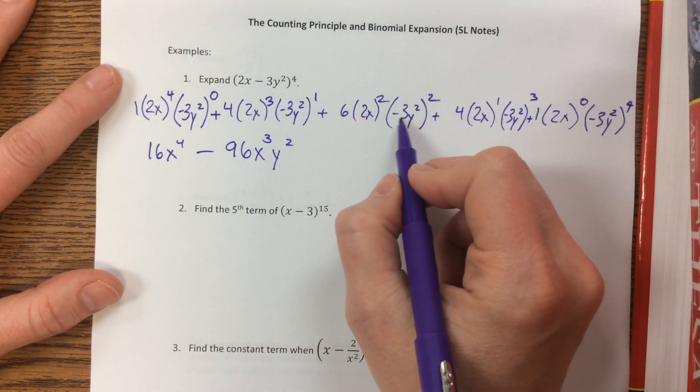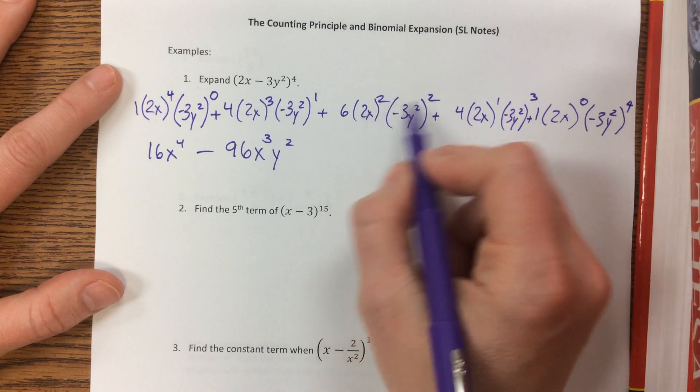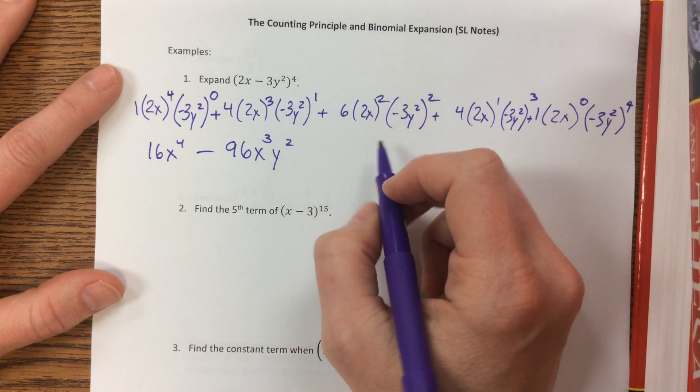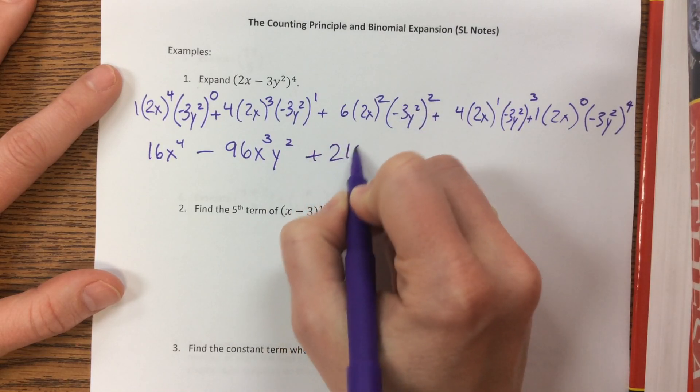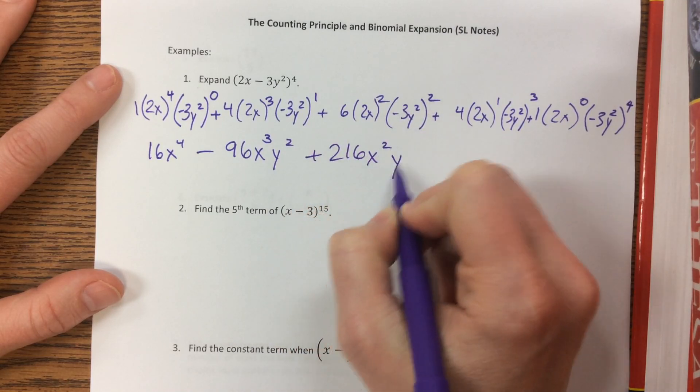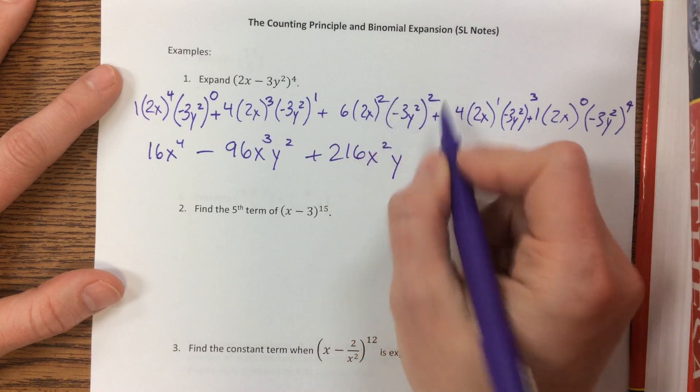Then the next one, this is 9 times 4 is 36 times another 6 is 216. And this negative becomes positive. The x is squared, the y is now raised to the 4th.